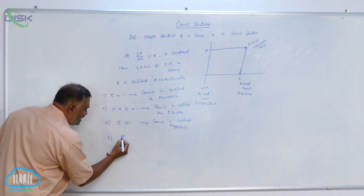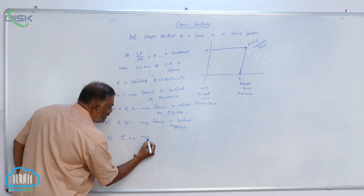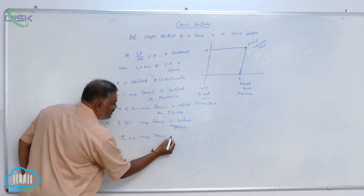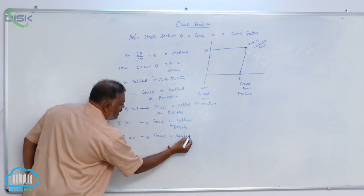Fourth one, E is equal to 0. Conic is called point circle.